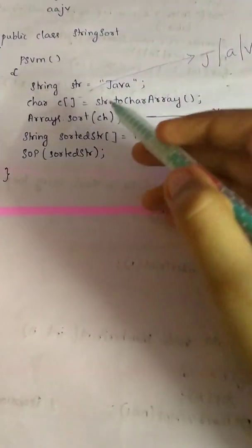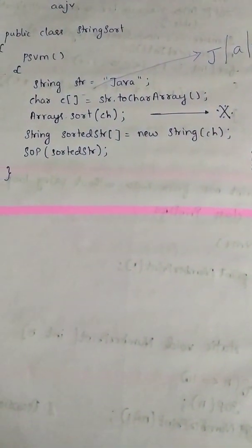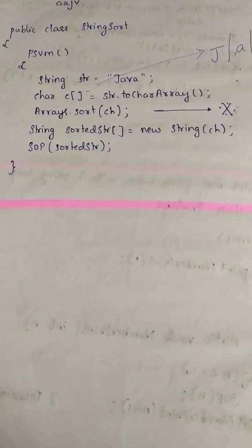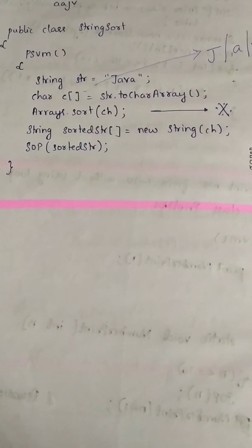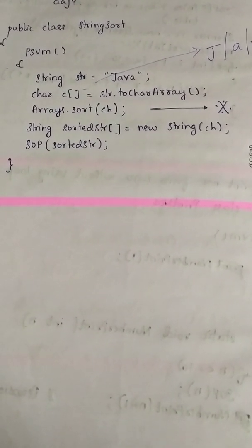After this, you're using a built-in function Arrays.sort and passing those characters as the parameter. All the characters would get sorted after this.